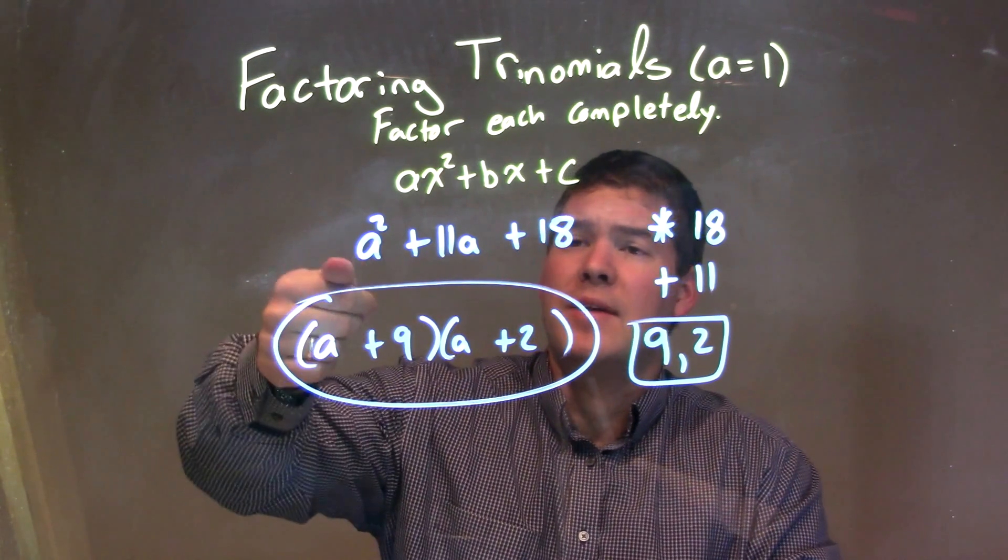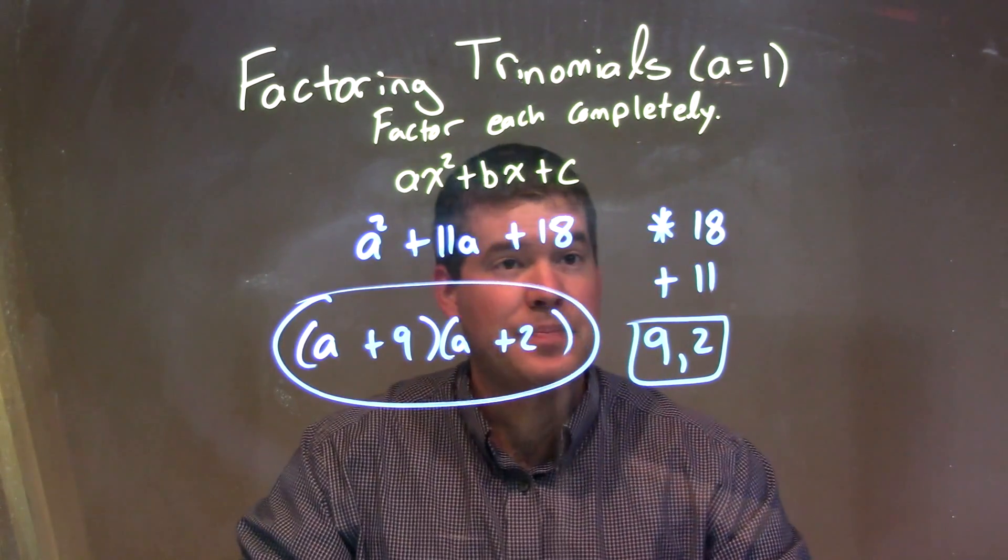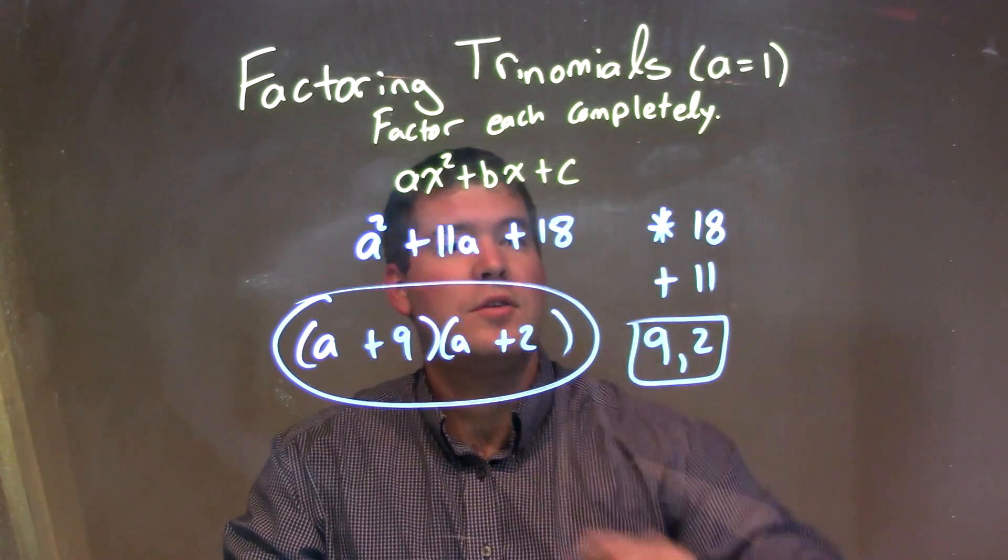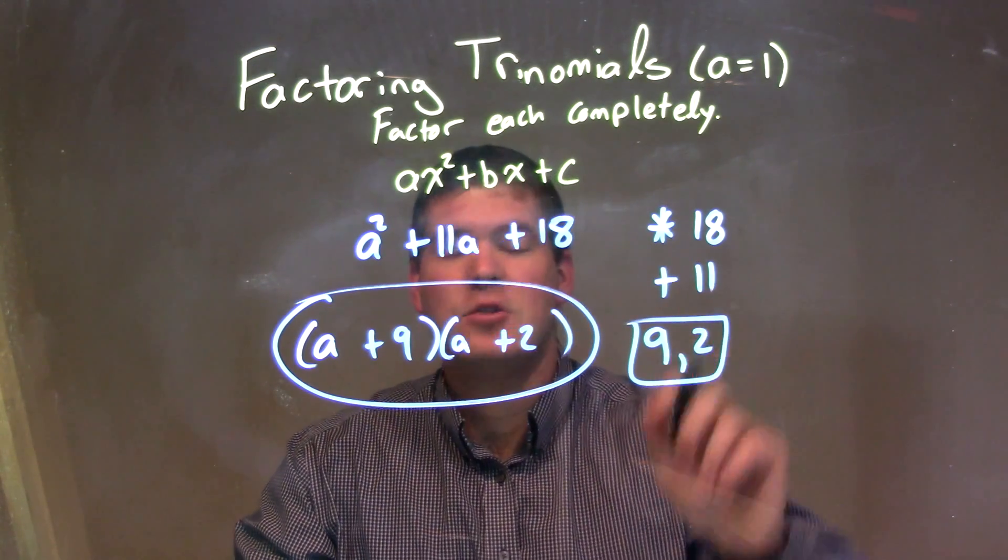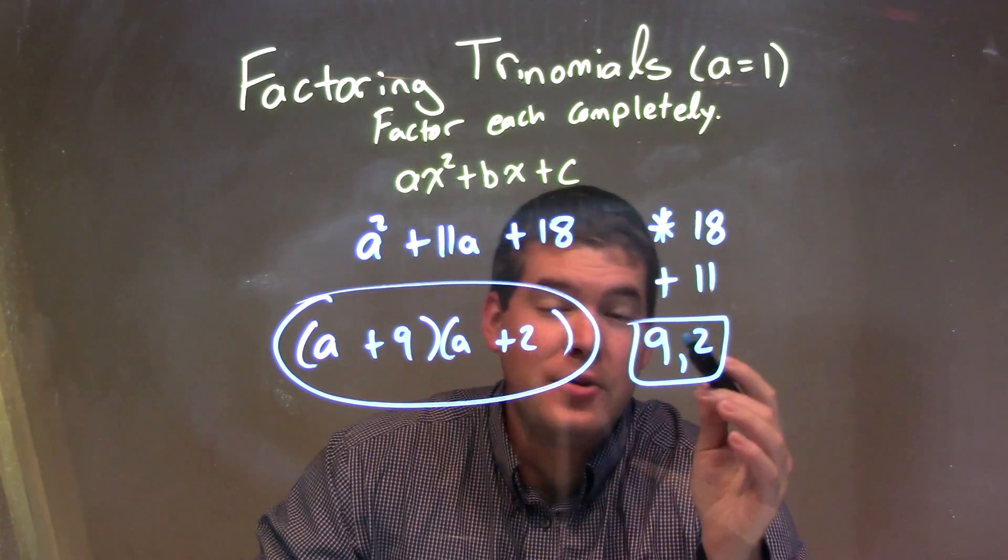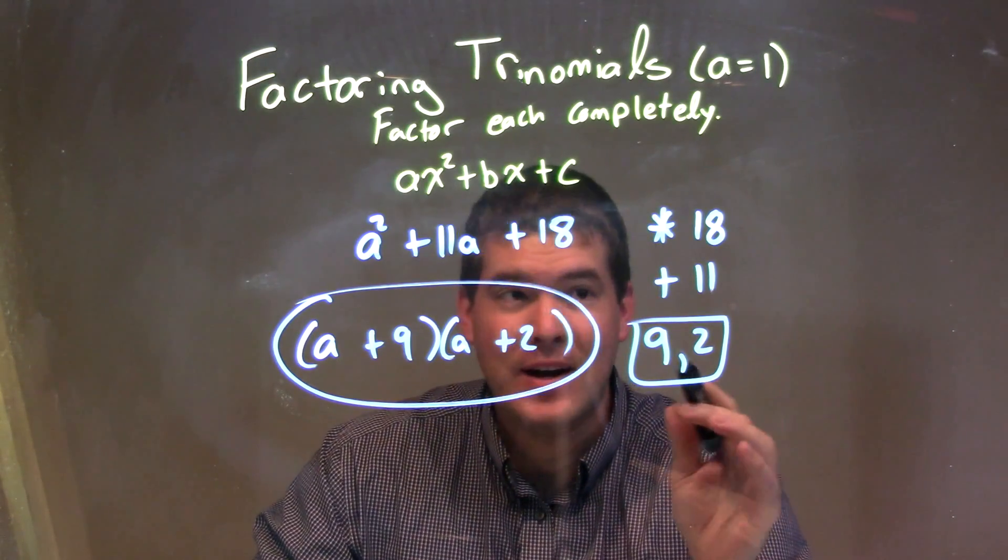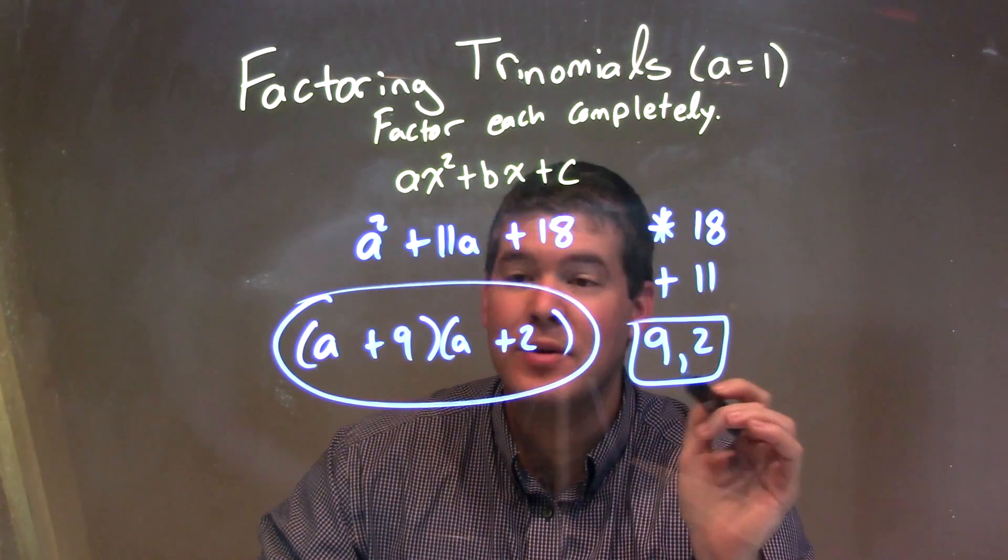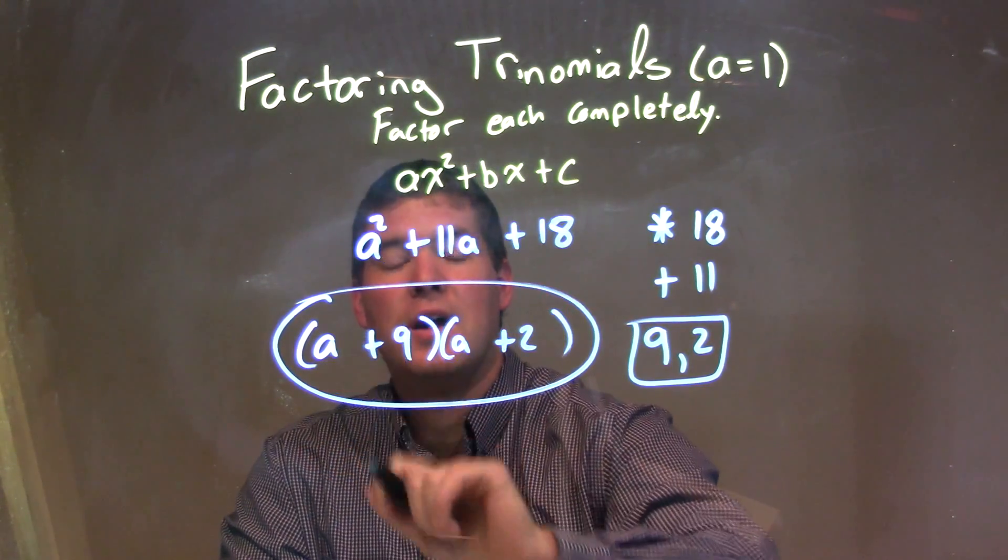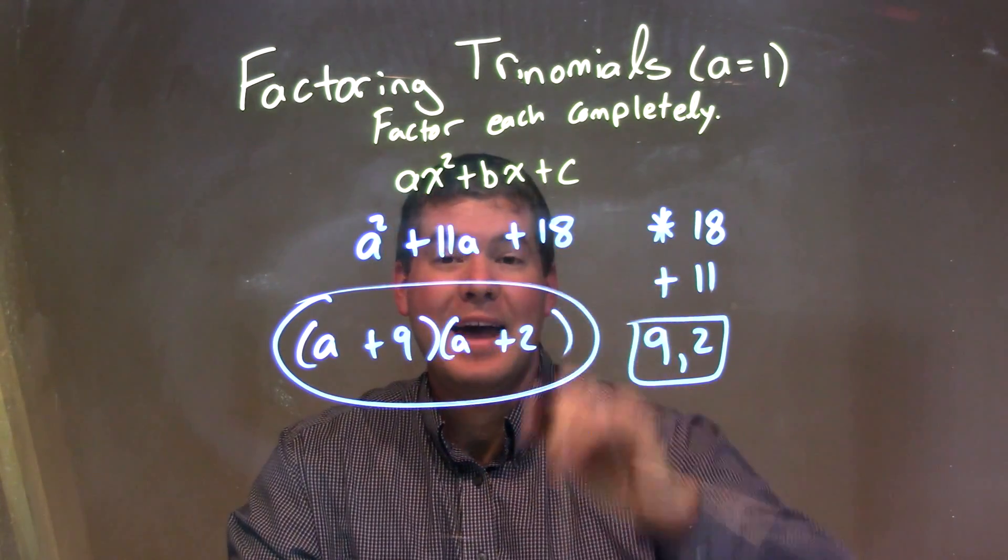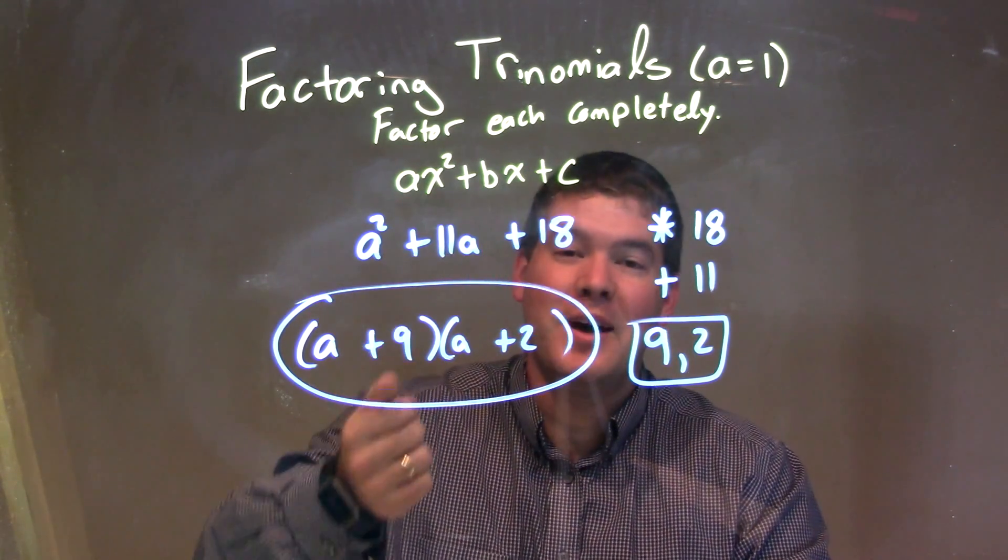Anyway, let's recap. We have a squared plus 11a plus 18. You're going to ask yourself the question, what two numbers multiply to be 18 and add to be 11? Well, the two numbers there are 9 and 2, right? 9 times 2 is 18, and 9 plus 2 is 11. So we write it here as a plus 9 times a plus 2, and that's it, our factored form, and our final answer.